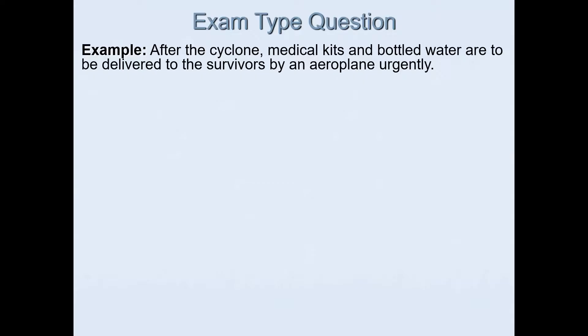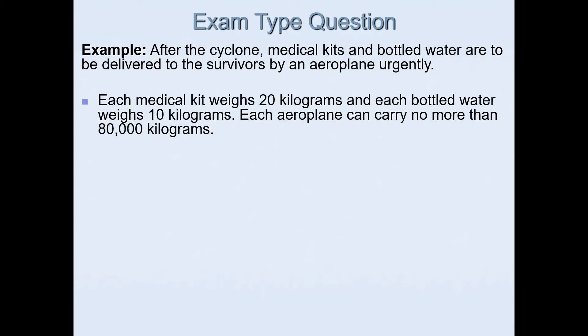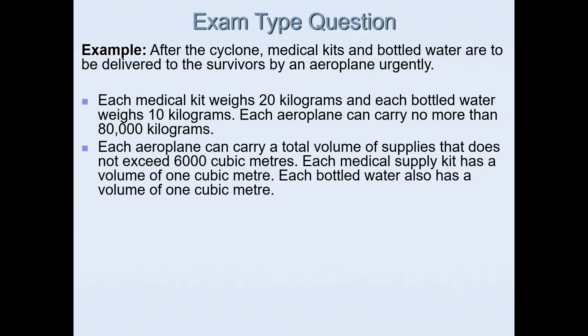We'll have a look at this example and go through the processes for solving this using linear programming. In this example, after the cyclone medical kits and bottled water are to be delivered to the survivors by an aeroplane urgently. Each medical kit weighs 20 kilograms and each bottled water weighs 10 kilograms. Each aeroplane can carry no more than 80,000 kilograms. Each aeroplane can carry a total volume of supplies that does not exceed 6,000 cubic meters. Each medical supply kit has a volume of one cubic meter and each bottled water also has a volume of one cubic meter.